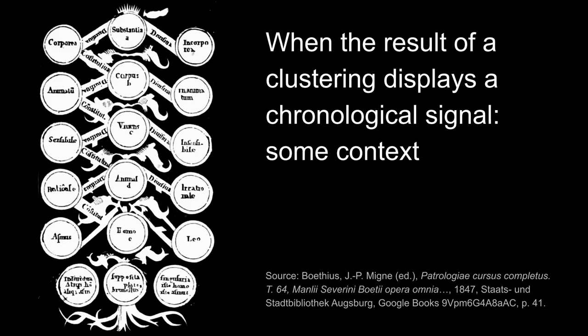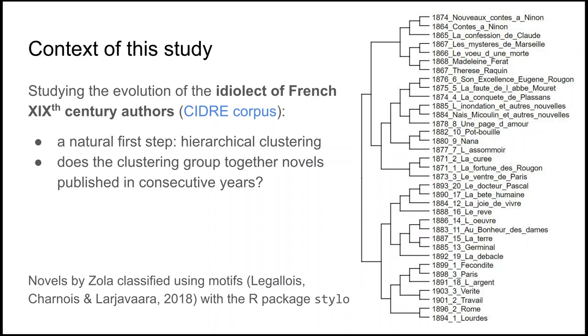So let's start with some elements of context about those clustering situations when we deal with dated data. For some novels by Émile Zola that we analyzed, they are extracted from the Cidre corpus that Olga will be presenting in the next session. So a natural first step for our purpose here, which was to study the evolution of the intellect of Émile Zola, was to first do a hierarchical clustering of the works and see whether we could spot that it was arranged chronologically. So, I'll let you have a look, do you think this clustering clusters together works which appeared in consecutive years?